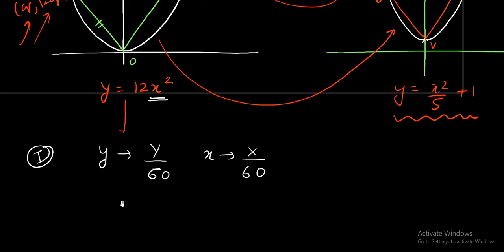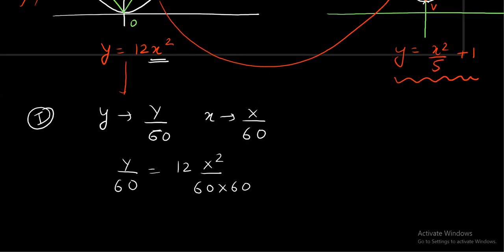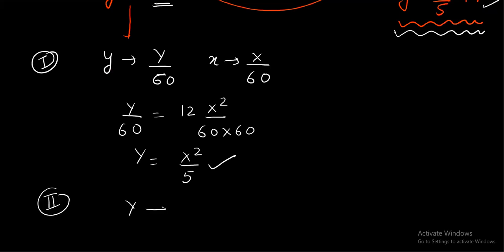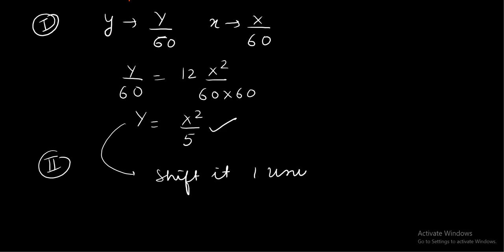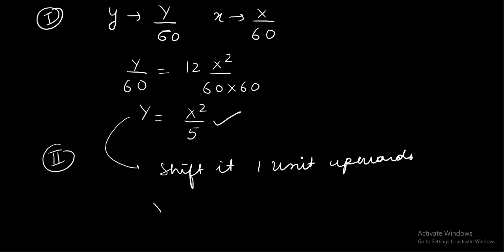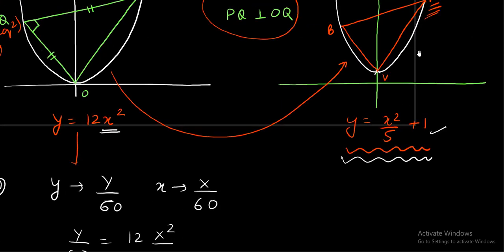After this scaling substitution we get a parabola of the kind Y = X²/5, but this is not exactly the second parabola. So in the second step, to reach the second parabola, we replace Y with Y − 1, or equivalently shift the parabola one unit upward. So whatever y-coordinate we get from the scaling step, we just add 1 to it to get the corresponding point on the second parabola.